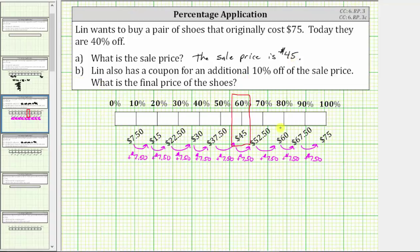we will need to redo the dollar amounts below the tape diagram. But because the coupon is for an additional 10% off, we can use the same percentages above the tape diagram.